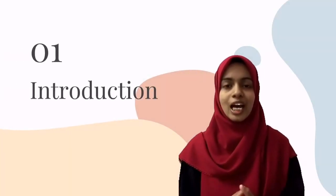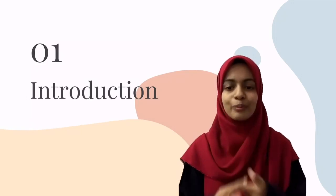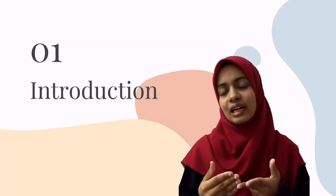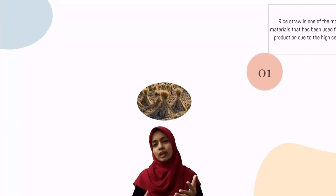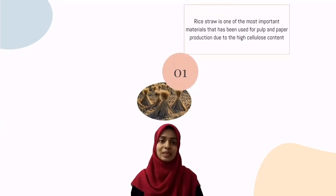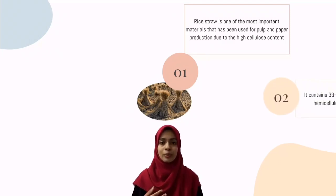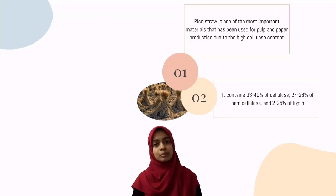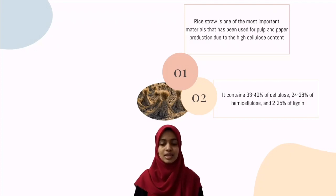For the introduction part, I will explain what is rice straw, the benefits of rice straw, and the bleaching technique in paper production. Rice straw is one of the important materials used in pulp and paper production due to its high cellulose content. By reading journals, I found that rice straw contains 33 to 40% cellulose, 24 to 28% hemicellulose, and 2 to 25% lignin.